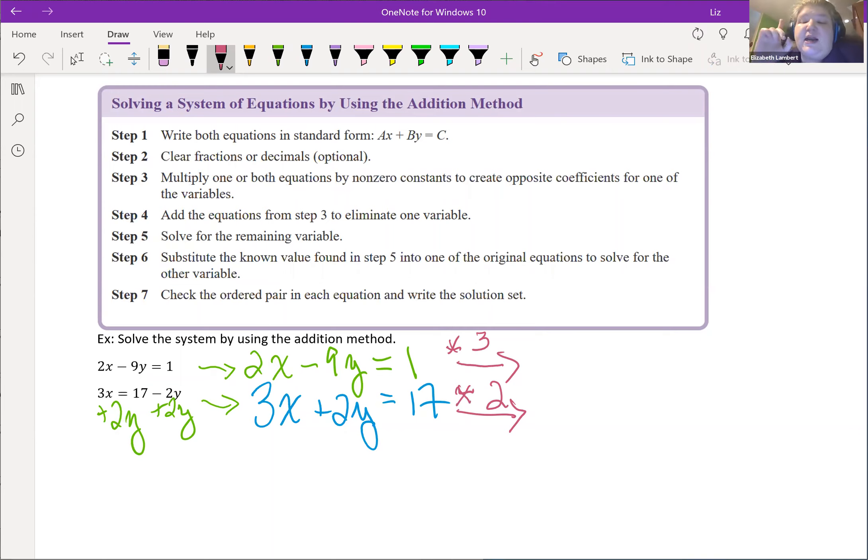There's a catch - I need them to add to zero. Right now they would both multiply to positive 6x. I need one of them to be negative. Doesn't matter which one is negative, just have to make one of them negative.